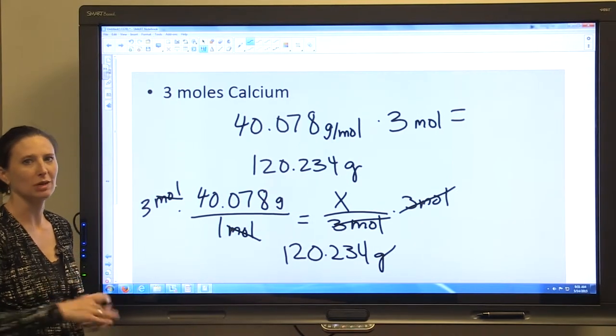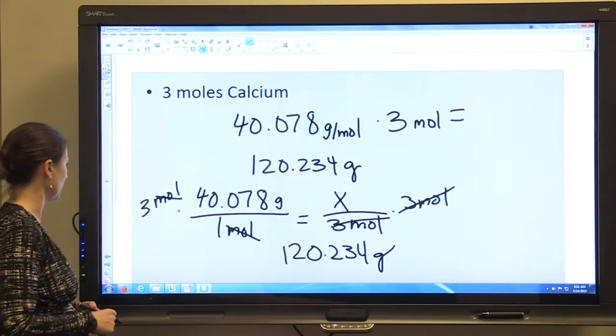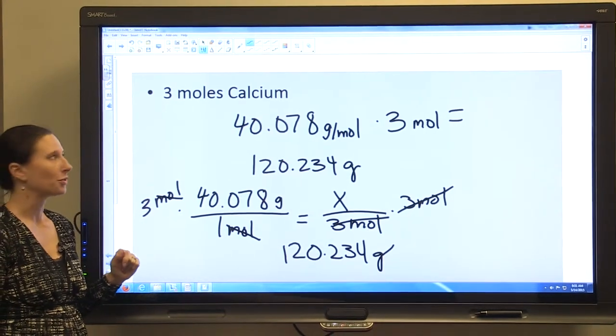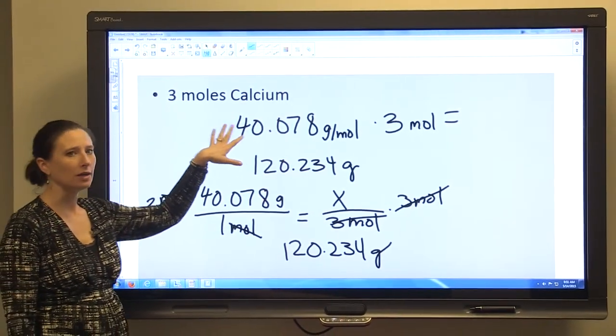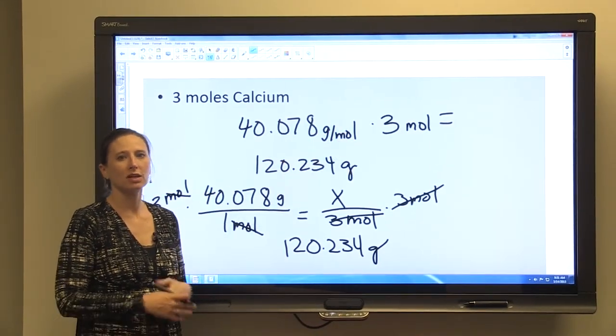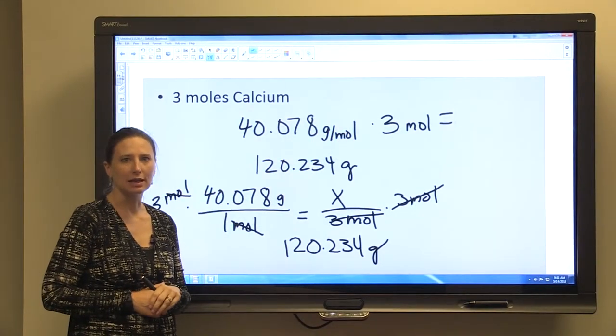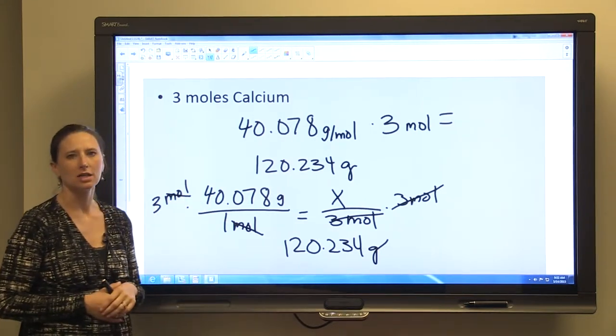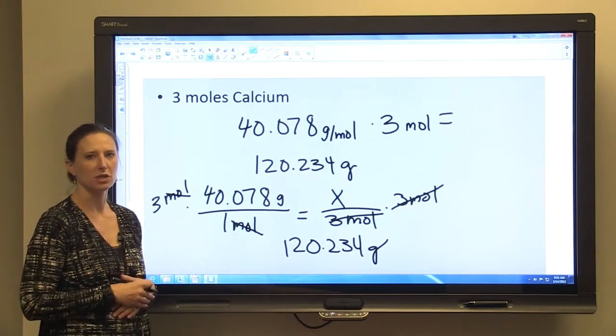So the same as we did by just multiplying by three, but that's a way to ensure that you are doing it properly and not just kind of looking at it and assuming that you know what to multiply by. So with single elements, it's really straightforward. You use the atomic weight, which gives you a weight of grams per mole, and you convert it to the number of moles you need. And that gives you the weight that you're looking for, for three moles of calcium or one mole of phosphorus.